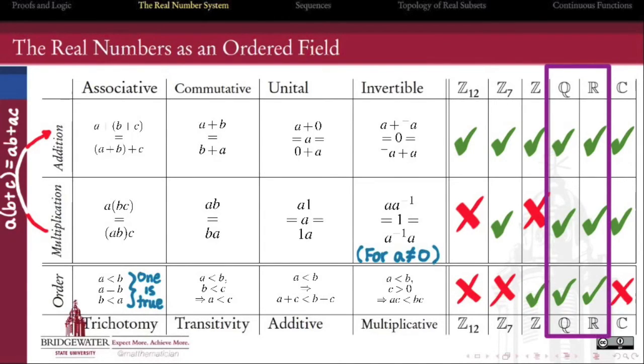Needing a totally ordered field already narrows down our possibilities considerably, but by itself, it's not enough to distinguish the real numbers from, say, the rationals.